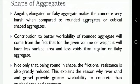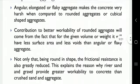Shape of aggregates. Angular, elongated and flaky aggregates make the concrete very harsh when compared to rounded or cubical shaped aggregates. The contribution to better workability of rounded aggregates comes from the fact that for a given volume or weight, they have less surface area and less voids than angular or flaky aggregates. Being round in shape, the frictional resistance is also greatly reduced. This explains why river sand and gravel provide greater workability to concrete than crushed sand and aggregate.